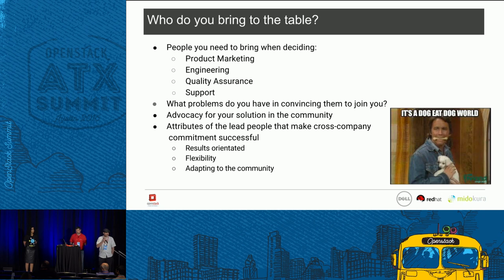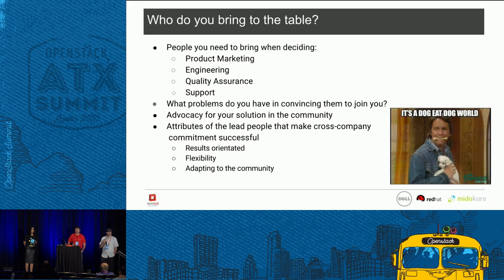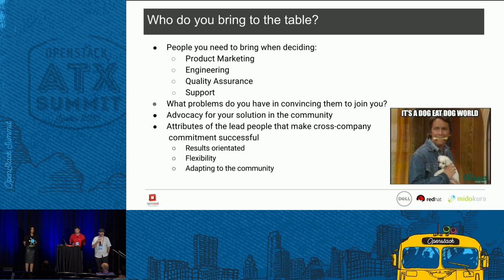At the end here we list the key individuals from each company and some required attributes: they need to be results-oriented; they need flexibility, because each company is going to be different and we're not going to be able to do it one single way; and finally they have to adapt to the community, because at the end of the day this entire project is going upstream — most of the work has already been published upstream into Ironic.